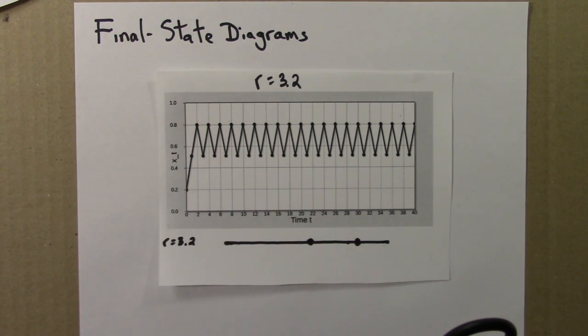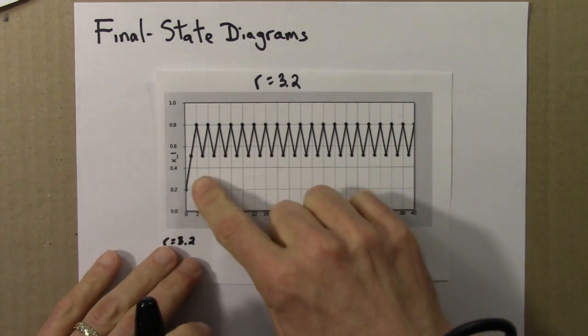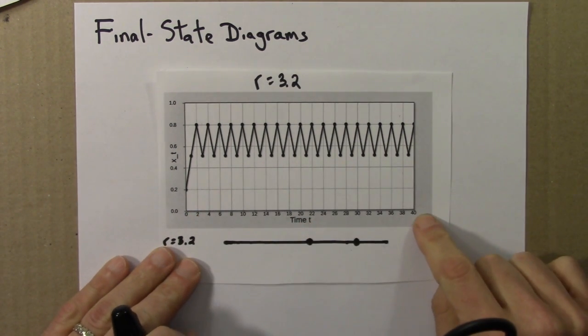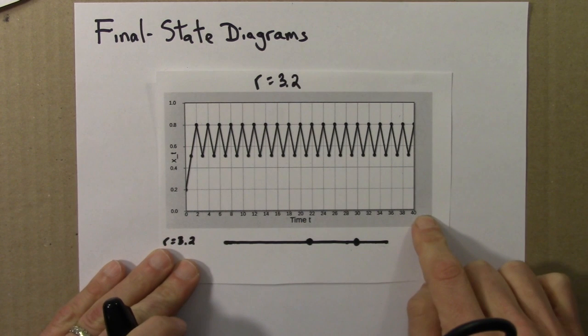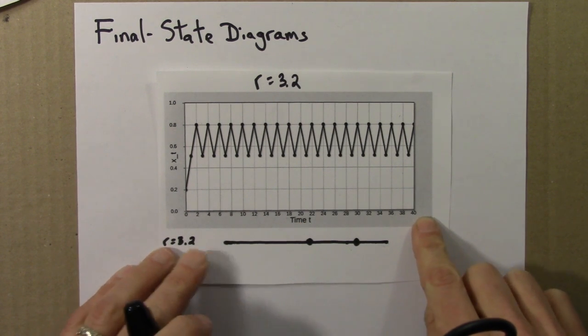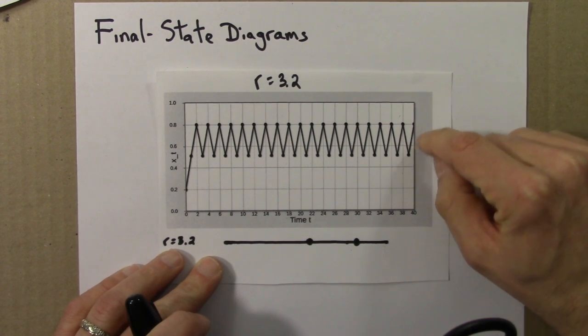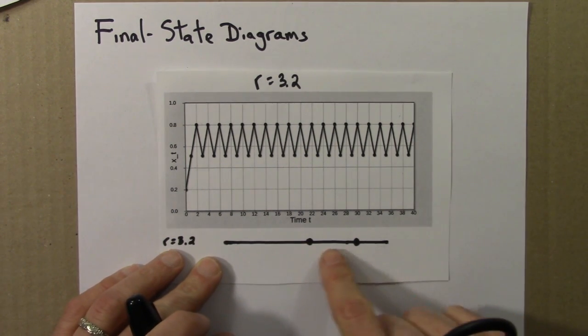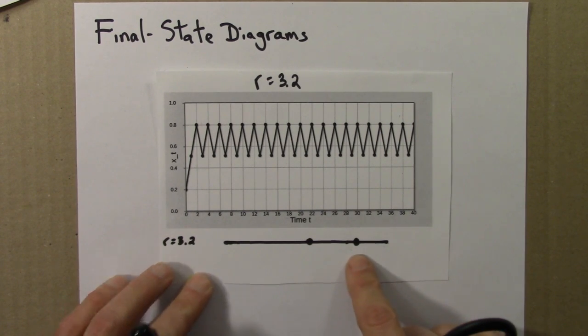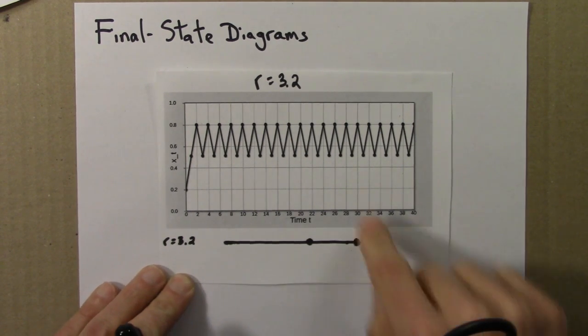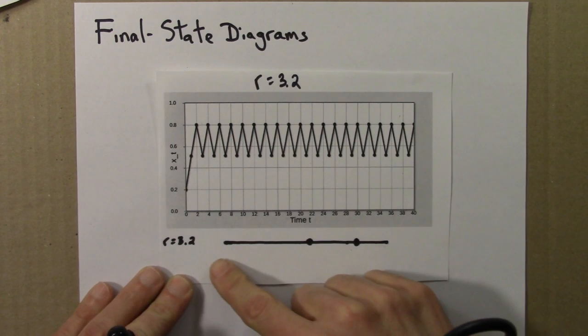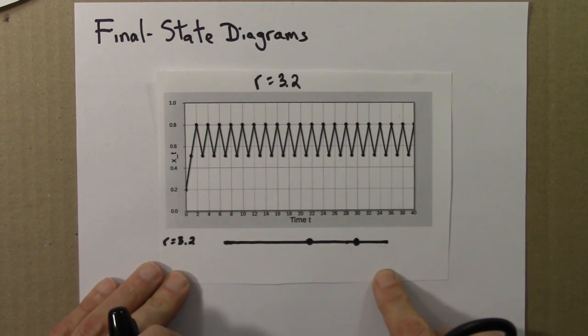And again, a way to think about the procedure for this is we might run this for 40 or 400 or even 4,000 times if we wanted. And then plot the next 100 points. And this time the next 100 points would just be oscillating back and forth between these two values. So that would appear as just two dots here on this line. So that would be the final state diagram for R equals 3.2.